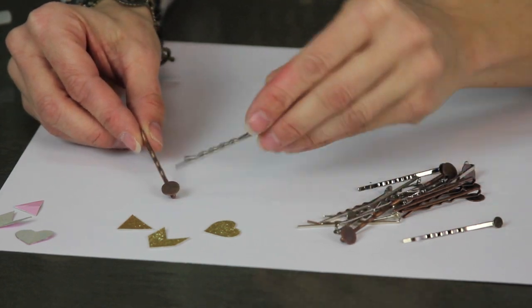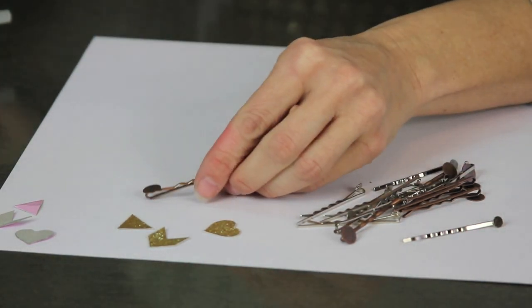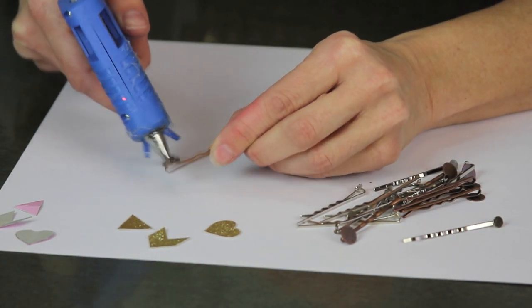Once you cut out your heart and your arrow, it's time to plug in your glue gun, grab your bobby pins and glue them together.